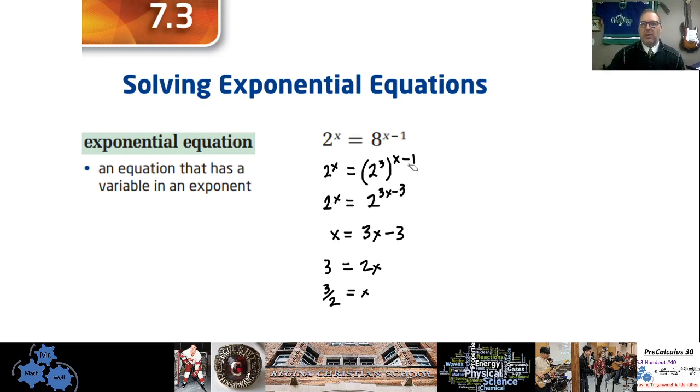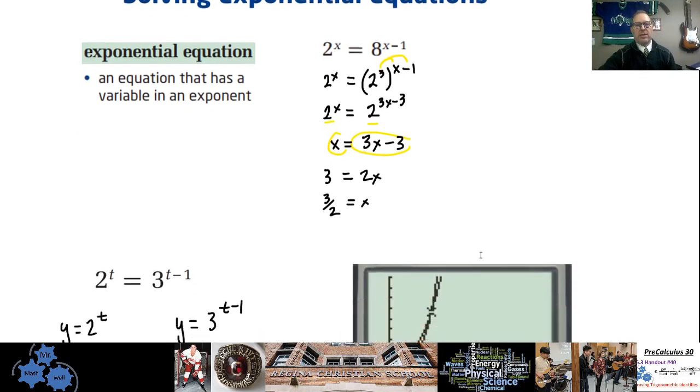Please notice that when you have a power raised to a power, you have to multiply. So notice that I multiplied this 3 here to get 3x minus 3. And then now that we have the same bases, now I can just let the exponents equal each other and solve by normal means. And of course, you can check that using your calculator. So 2 to the power of 3 over 2 equals 8 to the power of 1 over 2. And you can check that in your calculator. And that is, in fact, true.